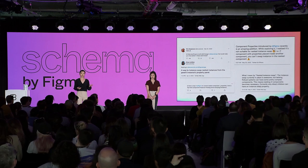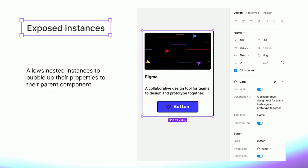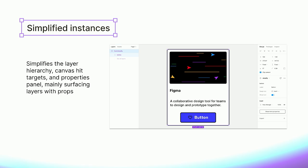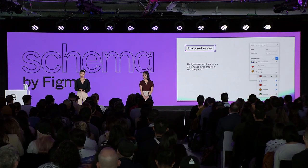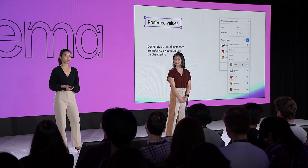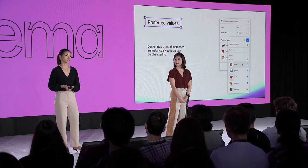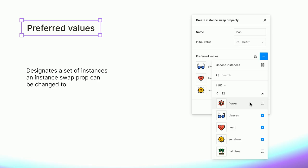With that, we launched three new features as part of component properties version two. The first is exposed instances, which allows you to have a top-level instance selected and automatically shows props from not only that instance but also any child instances — so you no longer have to navigate the layers panel guessing which instances have props. The second is simplified instances, which simplifies the layers panel, canvas hit targets, and properties panel so only layers with props are shown by default. Finally, preferred values lets design systems authors specify a set of instances that an instance prop can be swapped to, making it much easier for DS consumers since all preferred values live in a single drop-down folder.